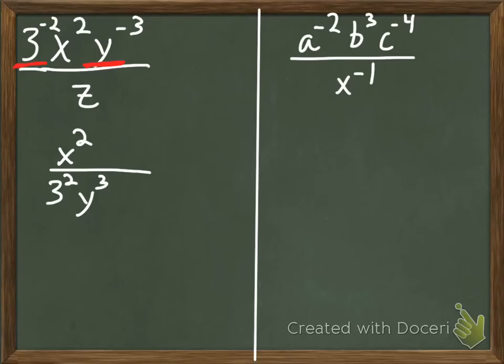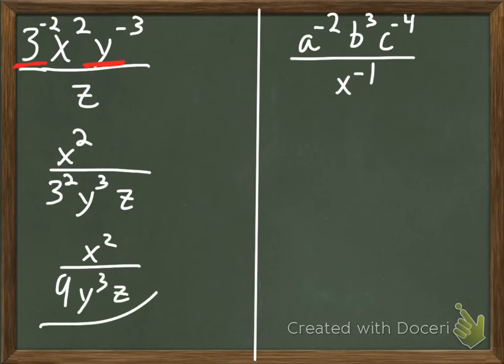And that z in the bottom, in the denominator, it's okay where it is, so there we go. Now there's one more simplification. And that is that 3 squared needs to become a 9. There we go.